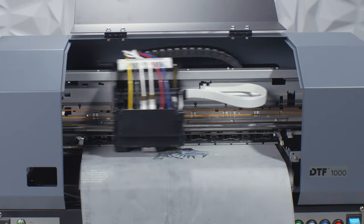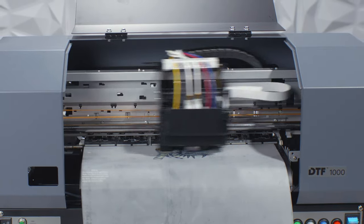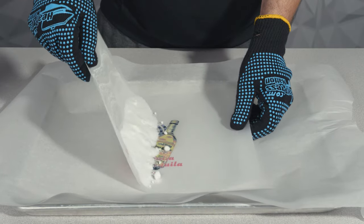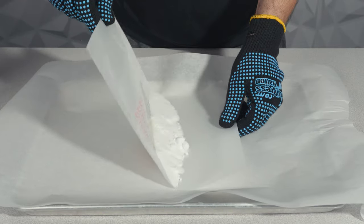DTF printing in general is not an instant process, though it may be faster than other methods. Some transfers may take a few minutes just to print, not counting the time for powdering, curing, and application. As a result, nearly all DTF users print in batches. A few feet of 13-inch wide batched prints could take anywhere from 10 to 25 minutes.